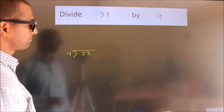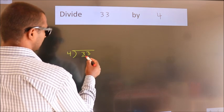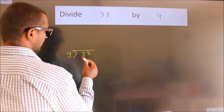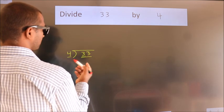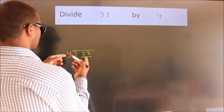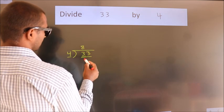Next, here we have 3, here 4. 3 is smaller than 4, so we should take 2 numbers, 33. A number close to 33 in the 4 table is 4 times 8 equals 32.